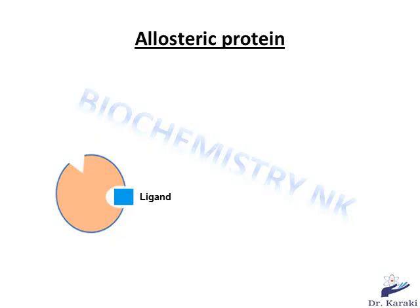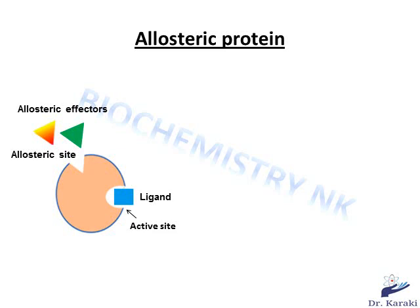Before we start talking about allosteric effectors, you must know that hemoglobin is an allosteric protein. What that means is hemoglobin has two receptor sites: one for the ligand and one for the allosteric effectors. And when an allosteric effector binds to a protein, it induces a conformational change in the protein structure affecting the ligand affinity in a positive or negative way, depending on the type of the effector molecule.